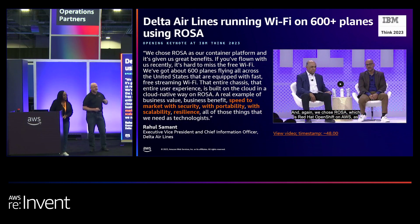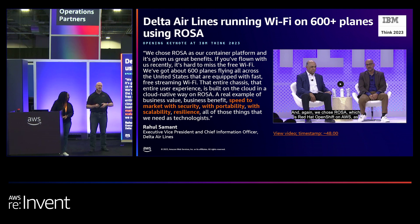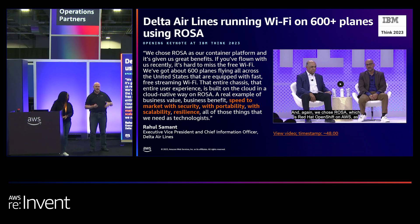A big user of ROSA is Delta Airlines. Delta built their free Wi-Fi system on it. One of the nice things they found is Delta has a platform they can train their developers on in days, not months — getting a standard delivery set of tools. They were able to deliver a Wi-Fi system for 600 aircraft, developed in ROSA and then deployed into the field, with extremely fast product development.